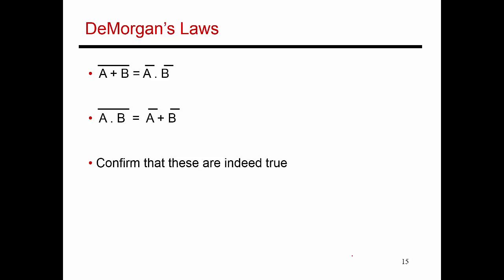We have De Morgan's Laws, which says that the inverse of A or B is nothing but the AND of A inverse and B inverse. And then similarly, the inverse of A AND B is the OR of A inverse and B inverse.